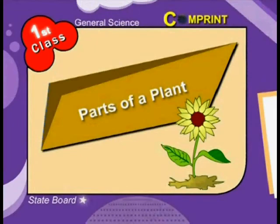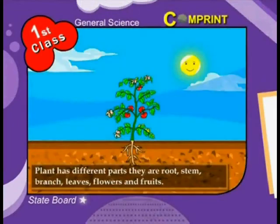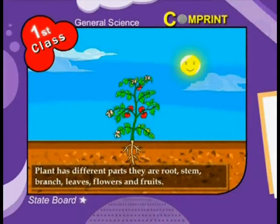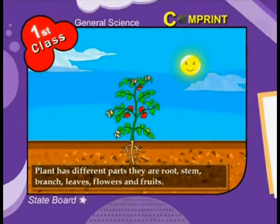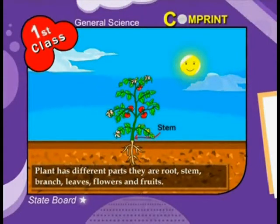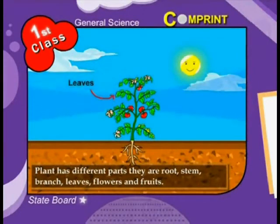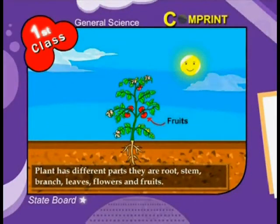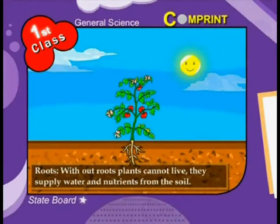Let us know the parts of a plant. A plant has different parts. They are root, stem, branch, leaves, flowers, and fruits.